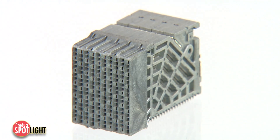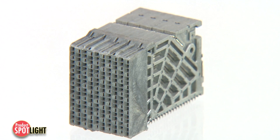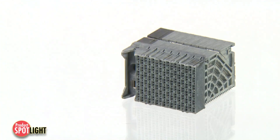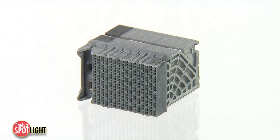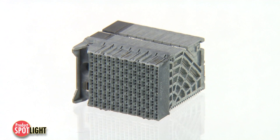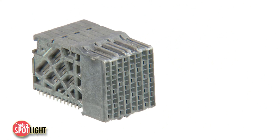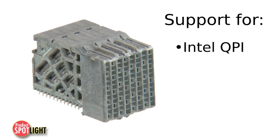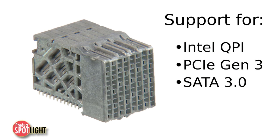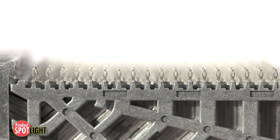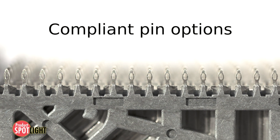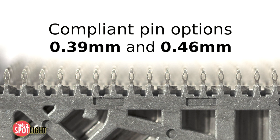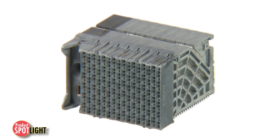Key features of the Impact Plus 85 ohm backplane connector system include an easy-to-manage 1.90 millimeter by 1.35 millimeter grid that provides routing flexibility and density of up to 80 differential pairs per linear inch. The 85 ohm impedance design supports Intel QPI, PCIe Gen 3, and SATA 3.0 architectures.